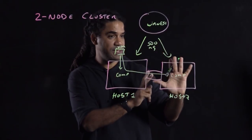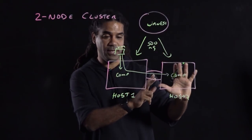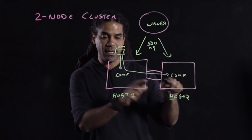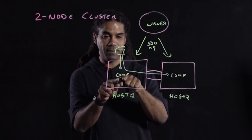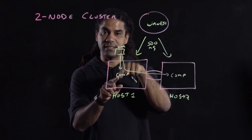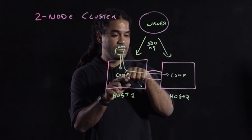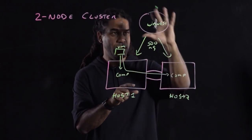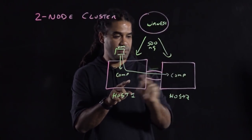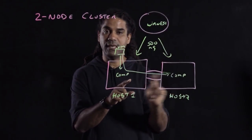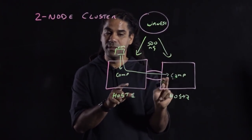If this host goes down, you already have a copy on the other host, so that host still has the data. What about if the witness goes down? That host still has the data, so the VMs still run.